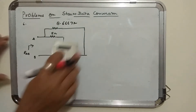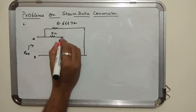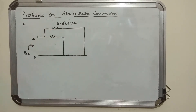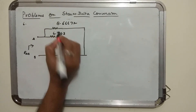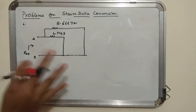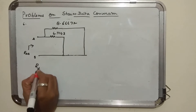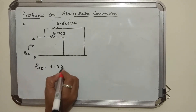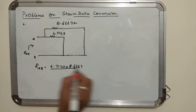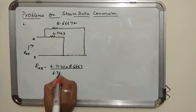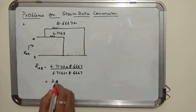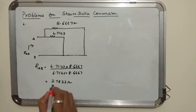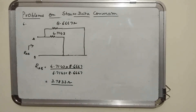And 5 ohm and 1.7143 ohm are in series, so their sum is 6.7143 ohms. Now these two resistances are in parallel, so RAB can be written as 6.7143 into 8.6667 divided by 6.7143 plus 8.6667, which equals 3.7833 ohms. So the resistance between A and B is 3.7833 ohms.